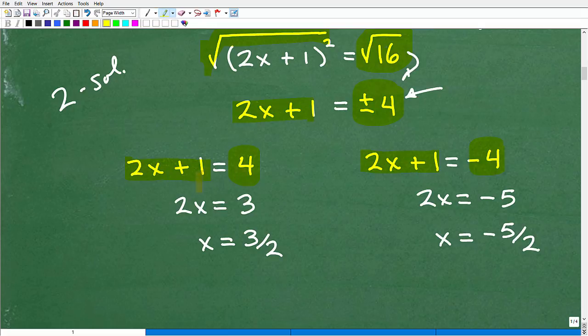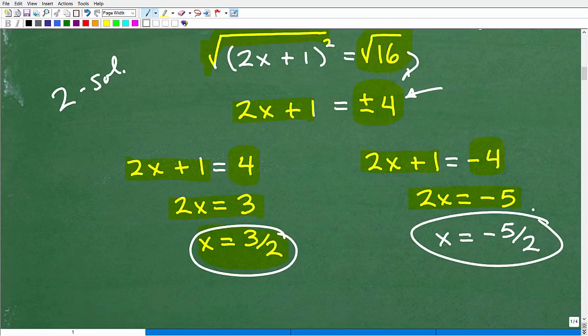Now, we can just go ahead and finish up. 2x plus 1 is equal to 4. Subtract 1 from both sides of the equation. I end up with 2x is equal to 3. Divide both sides of the equation by 2. I get x is equal to 3 halves. So, this is one solution. And then over here, I'm going to subtract 1 from both sides of the equation. I get 2x is equal to negative 5. And then here, divide both sides of the equation by 2. I get x is equal to negative 5 halves. So, this is one solution. And this is the other two solutions as promised.